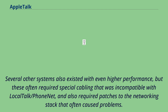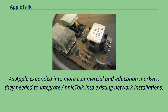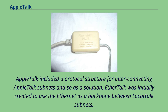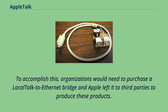As Apple expanded into more commercial and education markets, they needed to integrate AppleTalk into existing network installations. Many of these organizations had already invested in expensive Ethernet infrastructure with no direct way to connect a Macintosh to Ethernet. AppleTalk included a protocol structure for interconnecting AppleTalk subnets, so EtherTalk was initially created to use Ethernet as a backbone between LocalTalk subnets. Organizations would need to purchase a LocalTalk-to-Ethernet bridge, and Apple left it to third parties including Hayes and Kinetics to produce these products.